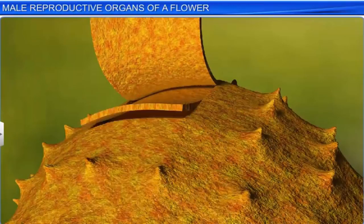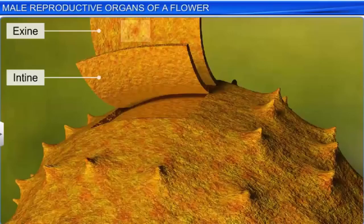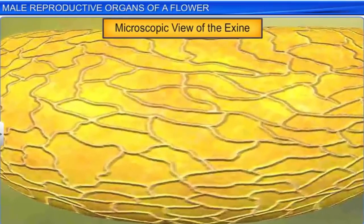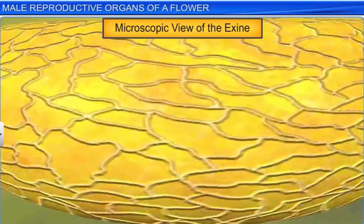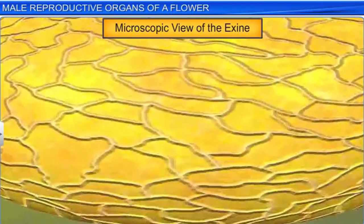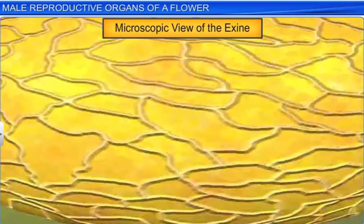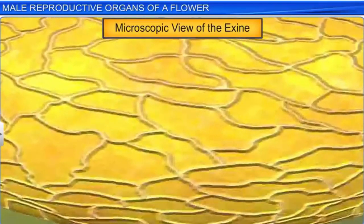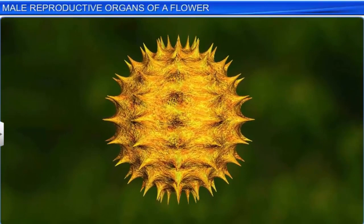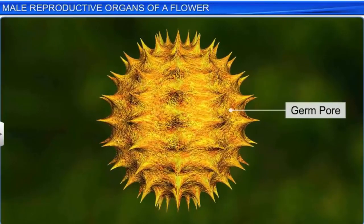It is surrounded by two layers of wall — exine and intine. Exine, the hard outer layer, is made up of sporopollenin, a tough organic material capable of resisting high temperatures and strong acids, alkalis, and all natural enzymes. Hence, pollen can be well preserved as fossils. However, sporopollenin is not present in the germ pore — an aperture present in the exine through which we see the germination of the pollen tube.